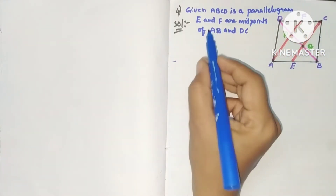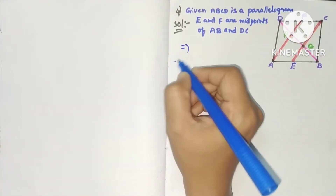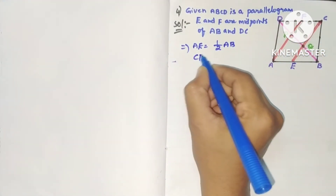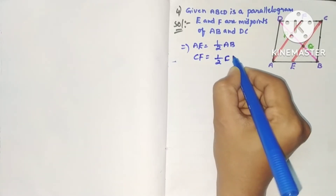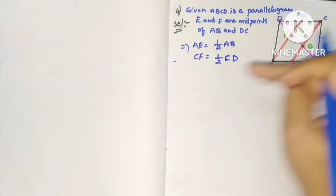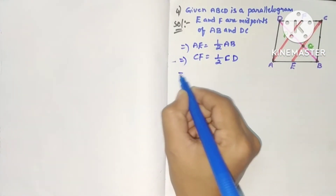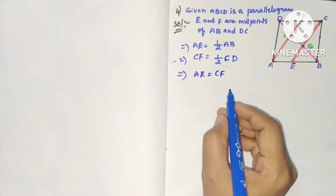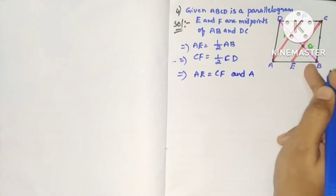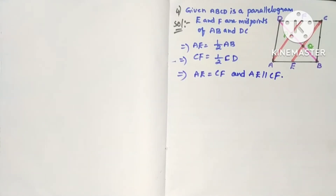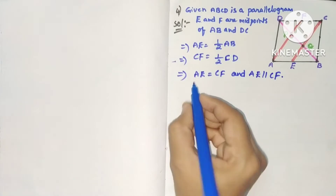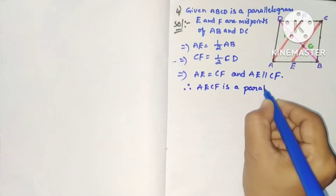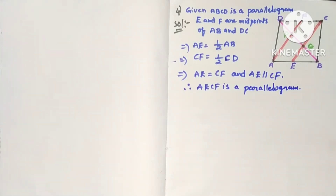To prove AECF is a parallelogram: since E and F are midpoints of AB and CD, AE equals half of AB and CF equals half of CD. Since ABCD is a parallelogram, opposite sides are equal, so AB equals CD, which implies AE equals CF. Also AE is parallel to CF. Therefore AECF is a parallelogram.